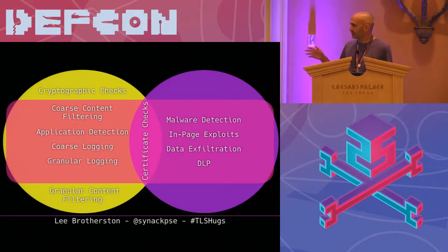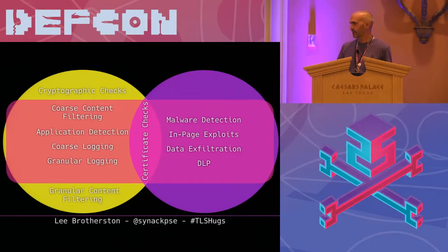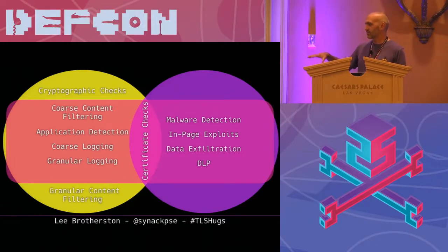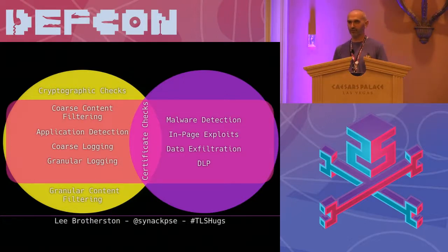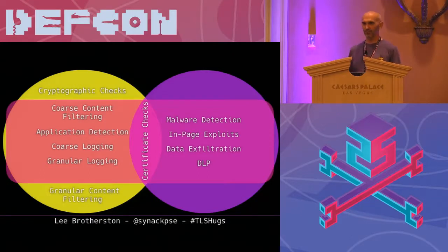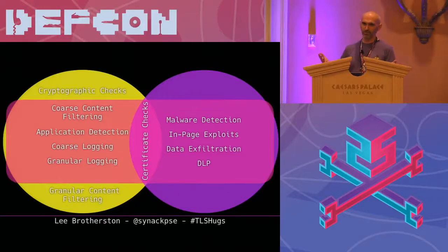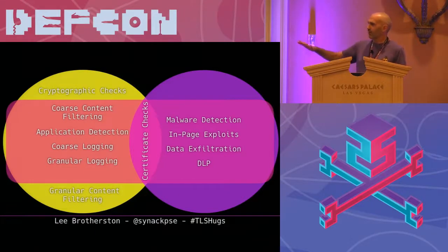Not many people seem to want cryptographic checks — by that I mean checking which algorithms are used and not used. They're pretty happy to trust their browsers to do that. And granular content filtering — I have an argument that people don't really need that. By granular I mean full URL content filtering instead of hostname. Most people don't want to block one category of porn and not another. They just want to block Pornhub or not block Pornhub. That's pretty much where they're at.